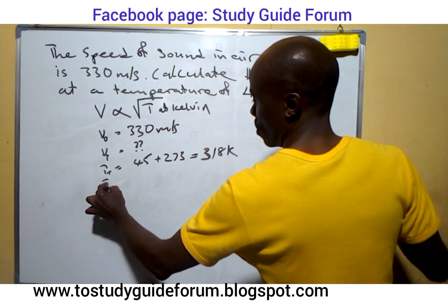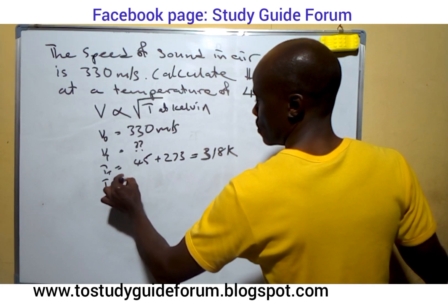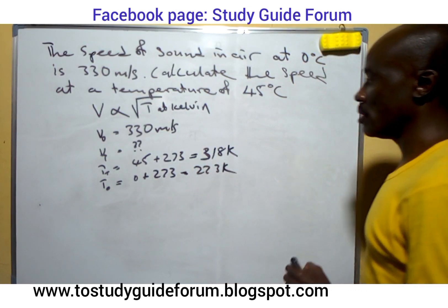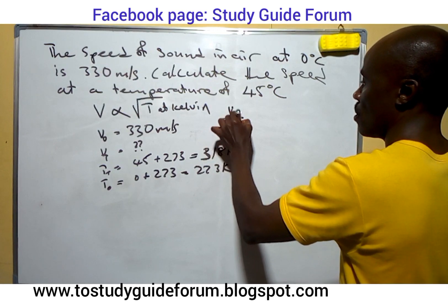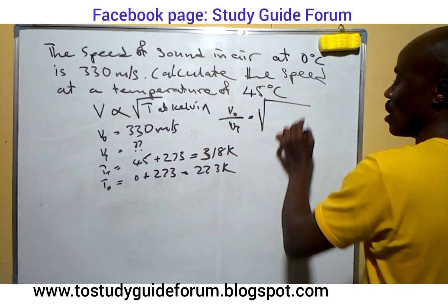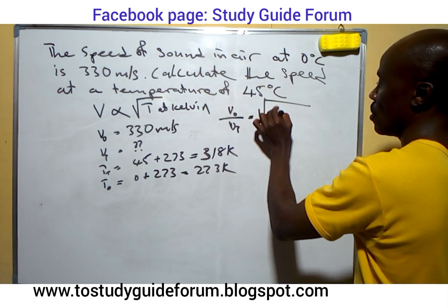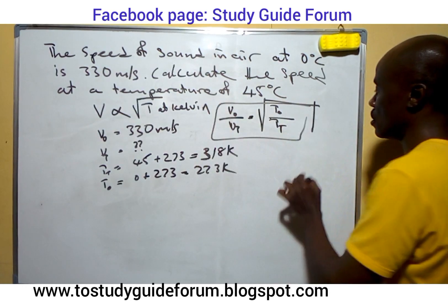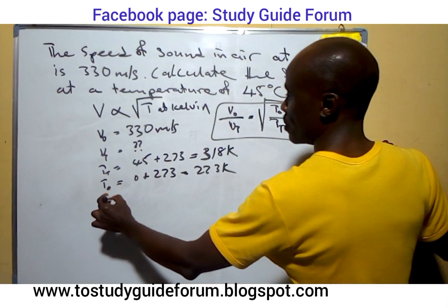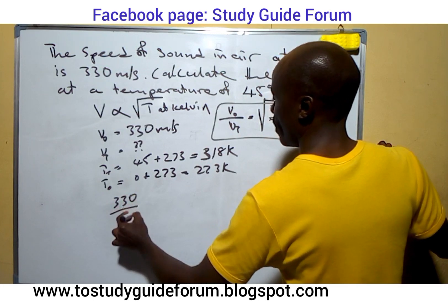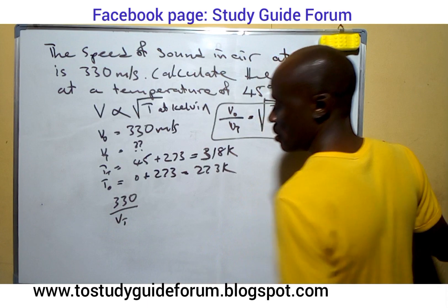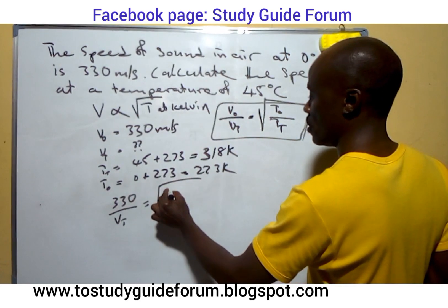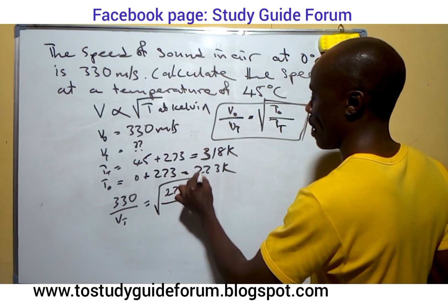For the temperature at zero, we have zero degrees Celsius plus 273 equals 273 Kelvin. The relationship is V₀ over Vt equals the square root of T₀ over Tt. Using this relationship, we have 330 over Vt equals the square root of 273 over 318.